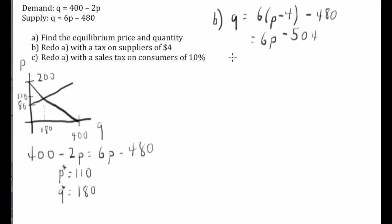We do the same thing. We set the two equations equal to each other. Again, I'm going to assume you can do the solving here. What you come up with is P equals $113 and Q equals 174 units.